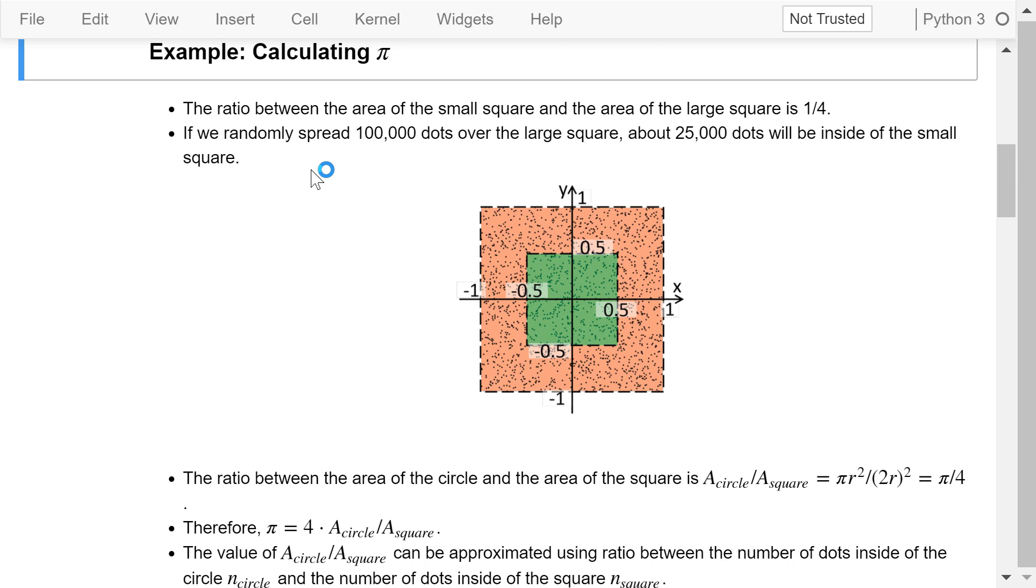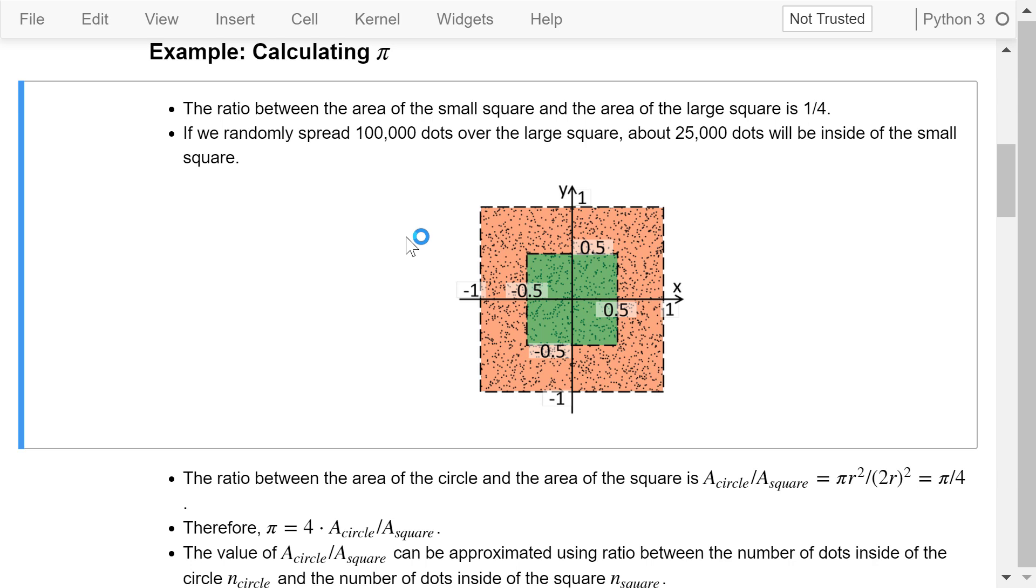The first example is calculating pi. The value of pi can be approximated by counting dots. The basic idea is demonstrated in the following image. We know that the ratio between the area of the small green square and the area of the large orange square is 1 in 4. Therefore, if we randomly spread 100,000 dots over the large square, about 25,000 dots will be inside of the small square.